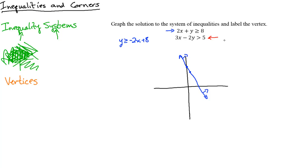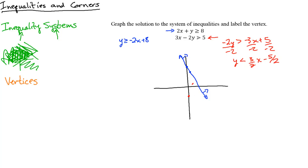The red inequality is 3x - 2y > 5. Solving for y: subtract 2y, divide by negative 2 — remember to flip the sign — giving y < (3/2)x - 5/2. The y-intercept is -5/2, slope is 3/2. Since we divided by a negative, it's a dashed line, and y is by itself so we shade below.